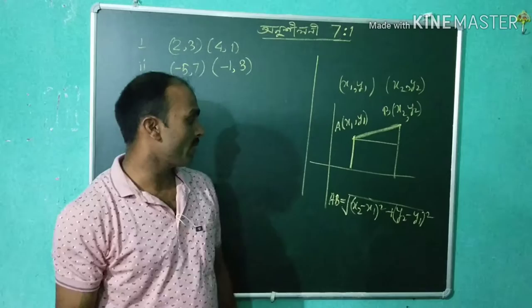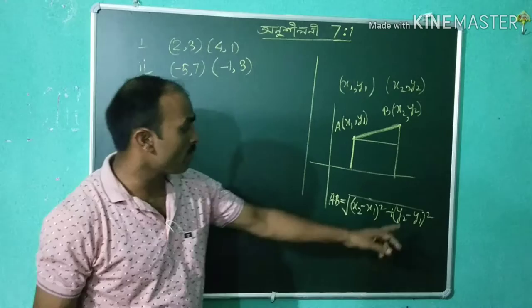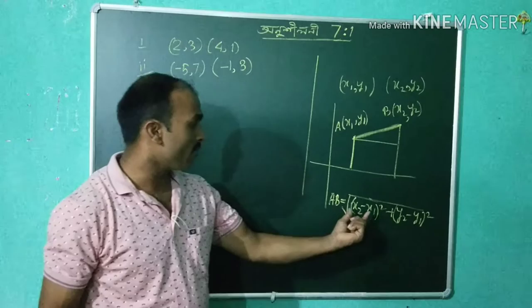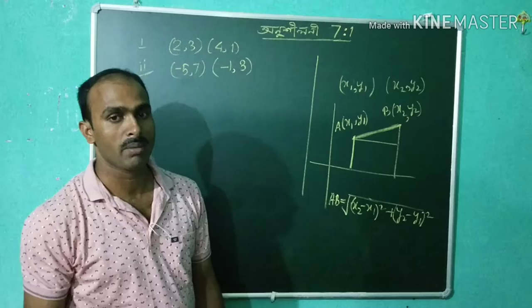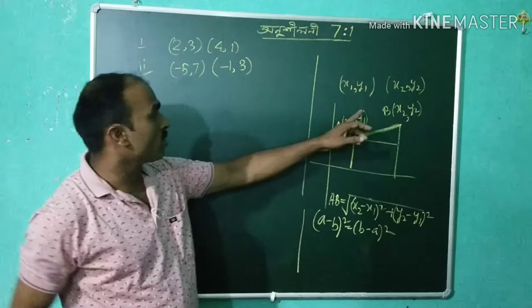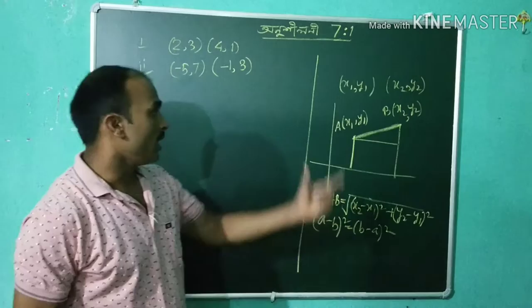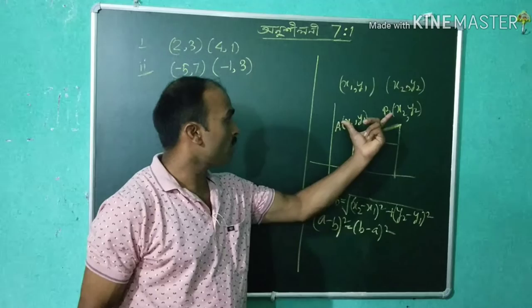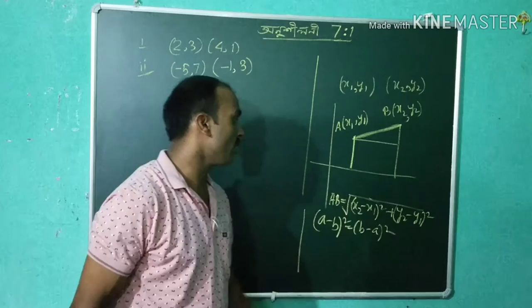This is the root of (x1 minus x2) whole square plus (y1 minus y2) whole square, which is equivalent to the standard distance formula.